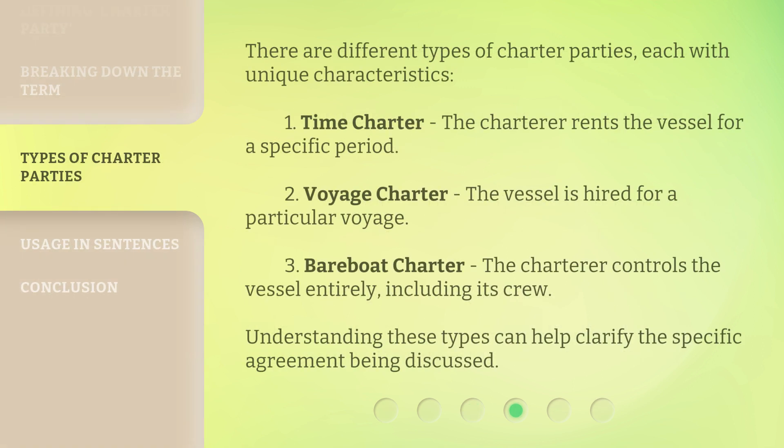There are different types of charter parties, each with unique characteristics. One: Time Charter — the charterer rents the vessel for a specific period. Two: Voyage Charter — the vessel is hired for a particular voyage. Three: Bare Boat Charter — the charterer controls the vessel entirely, including its crew. Understanding these types can help clarify the specific agreement being discussed.